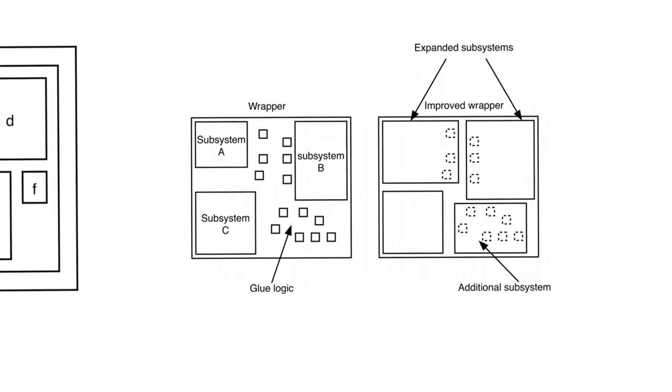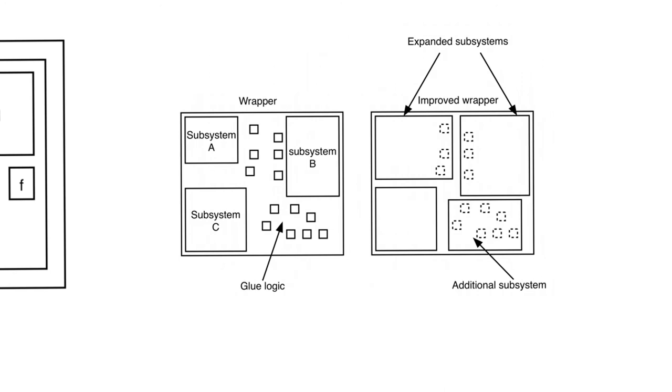One thing we have to understand is how the highest level of the design looks like. And the highest level of the design should include sub-designs or modules only. So the top level of the design is called the wrapper, and the wrapper should contain under it instantiations of big modules or big blocks, and that's it.